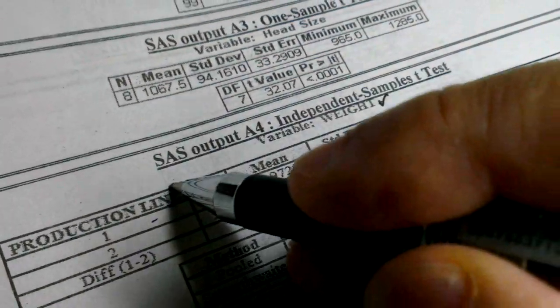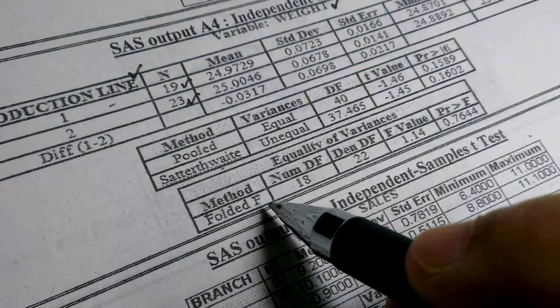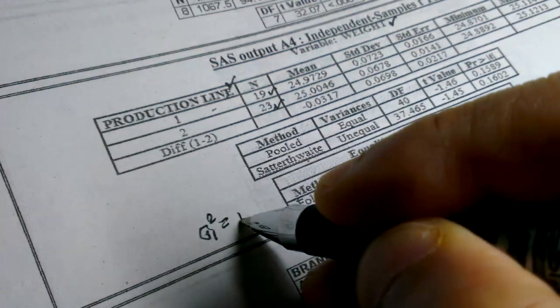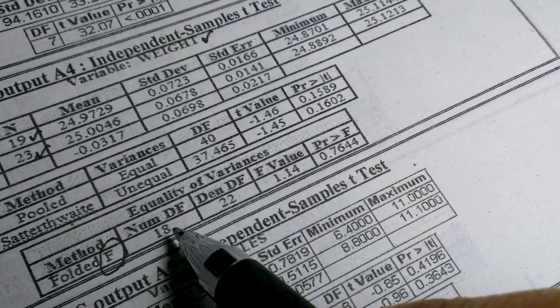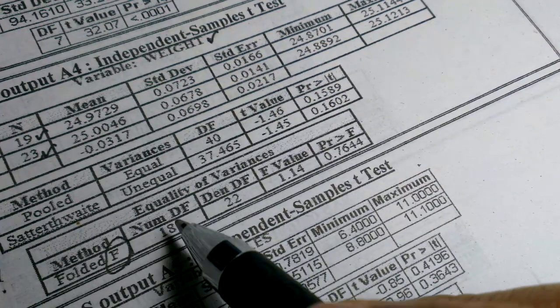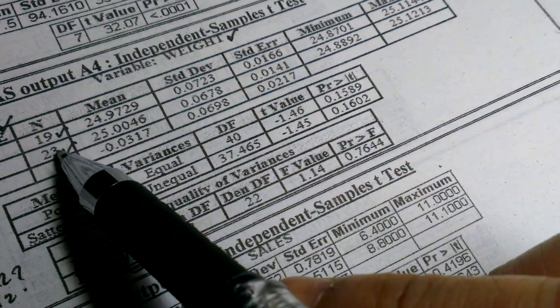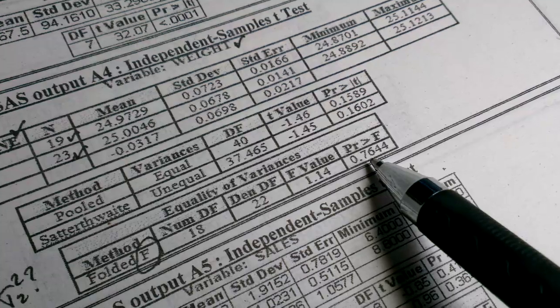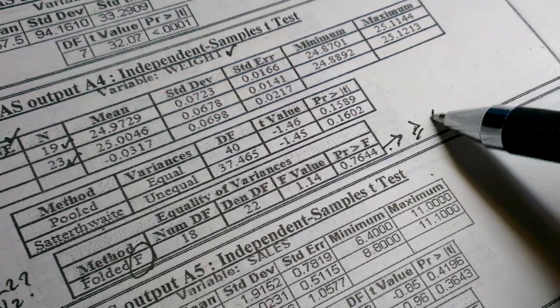Variable weight, production line correct, sample sizes correct. So you have to check this first, variance test first. Sigma 1 squared and sigma 2 squared equal or not. H0, so degrees of freedom for numerator 18, 19 minus 1 is 18. Degrees of freedom for denominator 22, 23 minus 1 is 22, correct. F statistic 1.14, p-value 0.7644, not smaller than alpha 0.05.